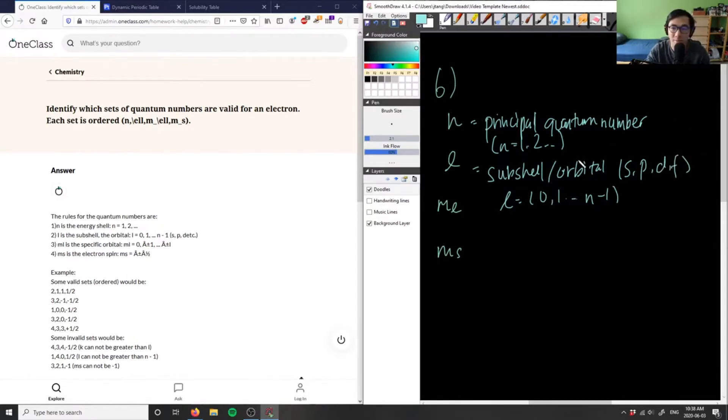For example, if you had an element that had a principal quantum number of two, that means my subshell is going to be from zero to one here. So zero representing the s orbital and one representing the p orbital, which is correct here. So you can either exist in the s orbital or the p orbital.